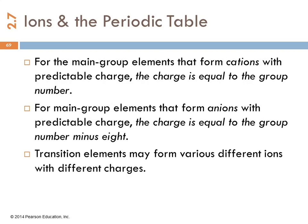For those elements forming predictable charges, for the metals, the charge is equal to the group number. These are main group elements. For the anions, a different way to think of it is the group number minus 8. So, oxygen is in group 6A. 6 minus 8 is minus 2. The transition elements? Unpredictable. We'll deal with them later.